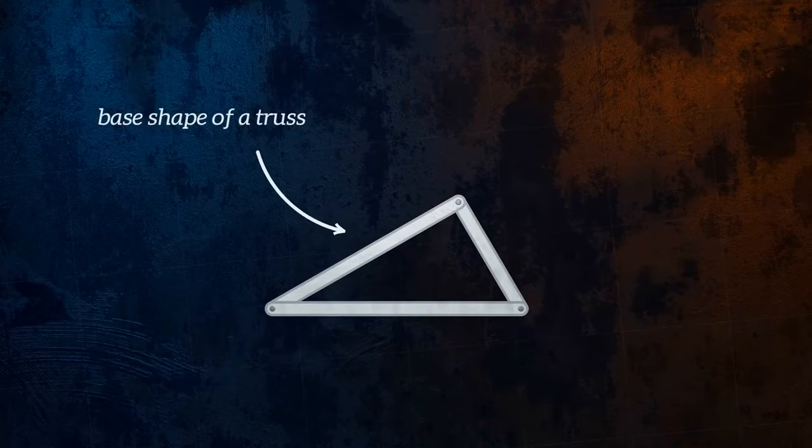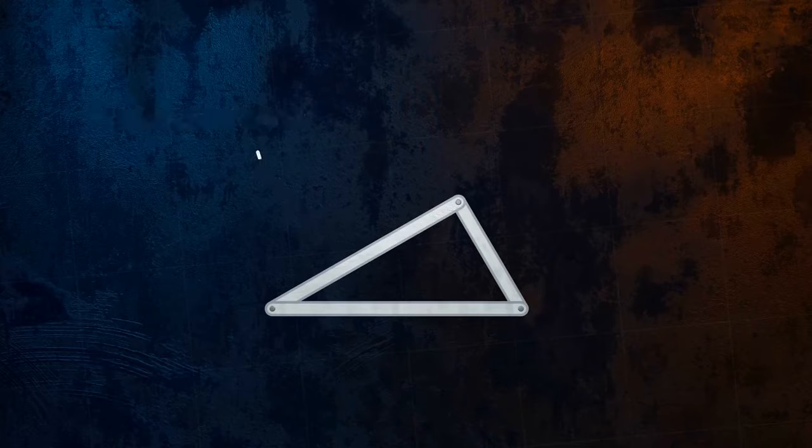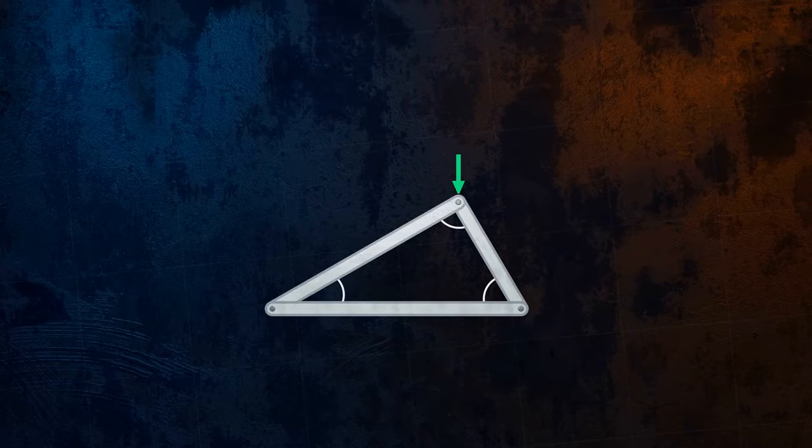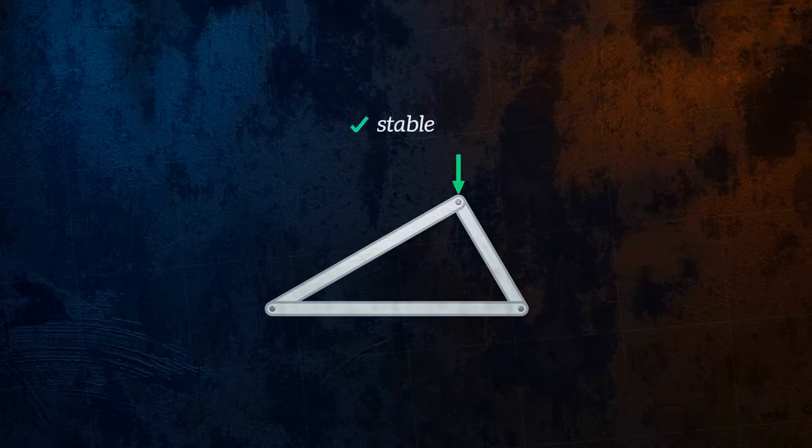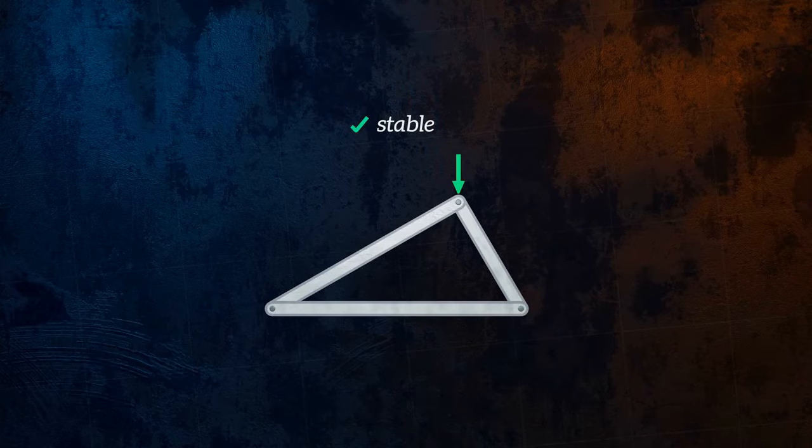The base shape of a truss is three members connected to form a triangle. If a load is applied, the angles of the triangle won't be able to change if the length of each of the members stays the same. This means that the triangle is a very stable shape which won't deform when loads are applied to it, and so it is a great base from which to build a larger structure.